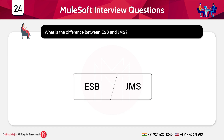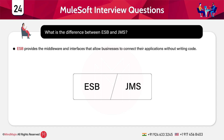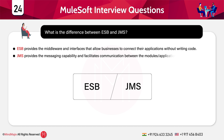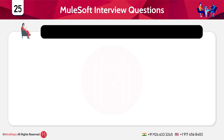What is the difference between ESB and JMS? ESB provides the middleware and interfaces that allow businesses to connect with their applications without the need for writing any code. JMS, on the other hand, provides messaging capability and facilitates communication between modules or applications.